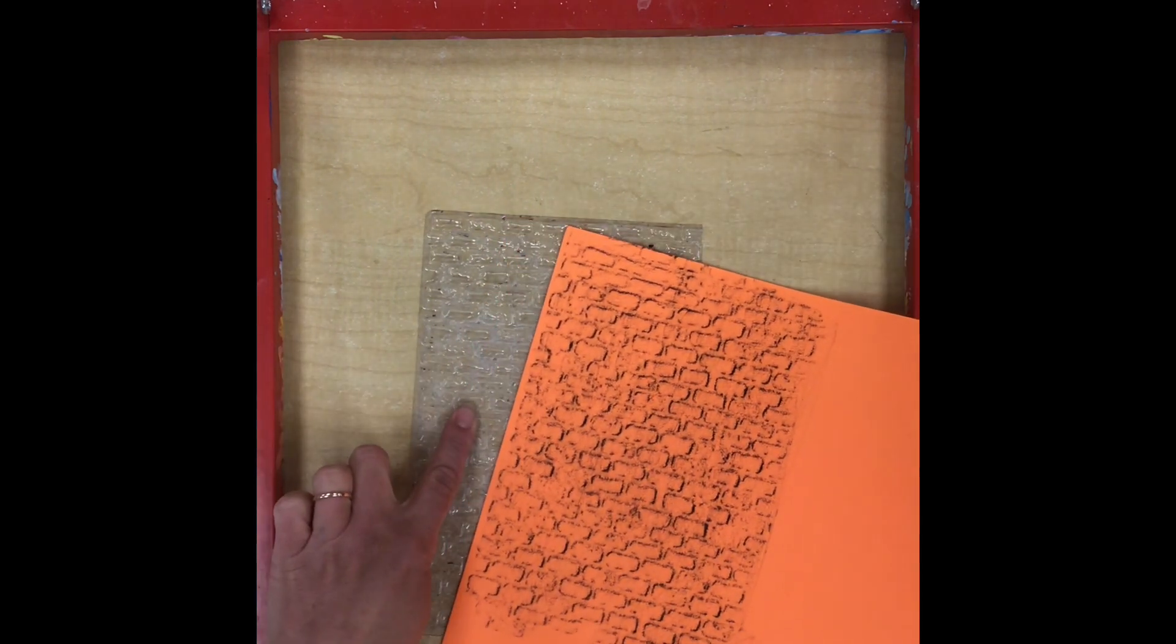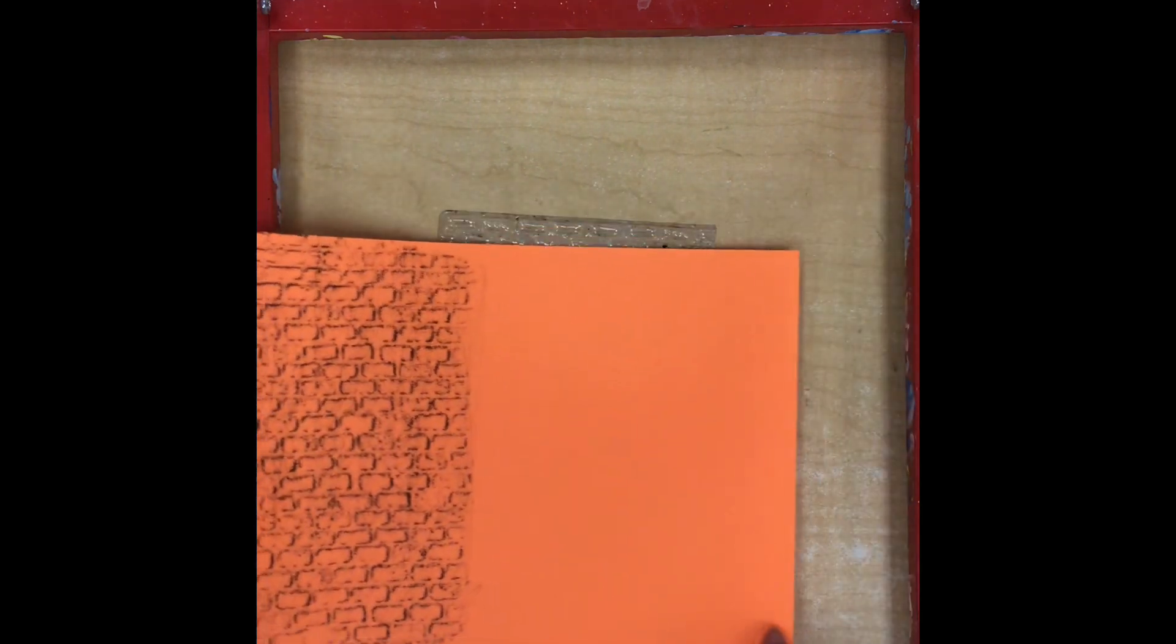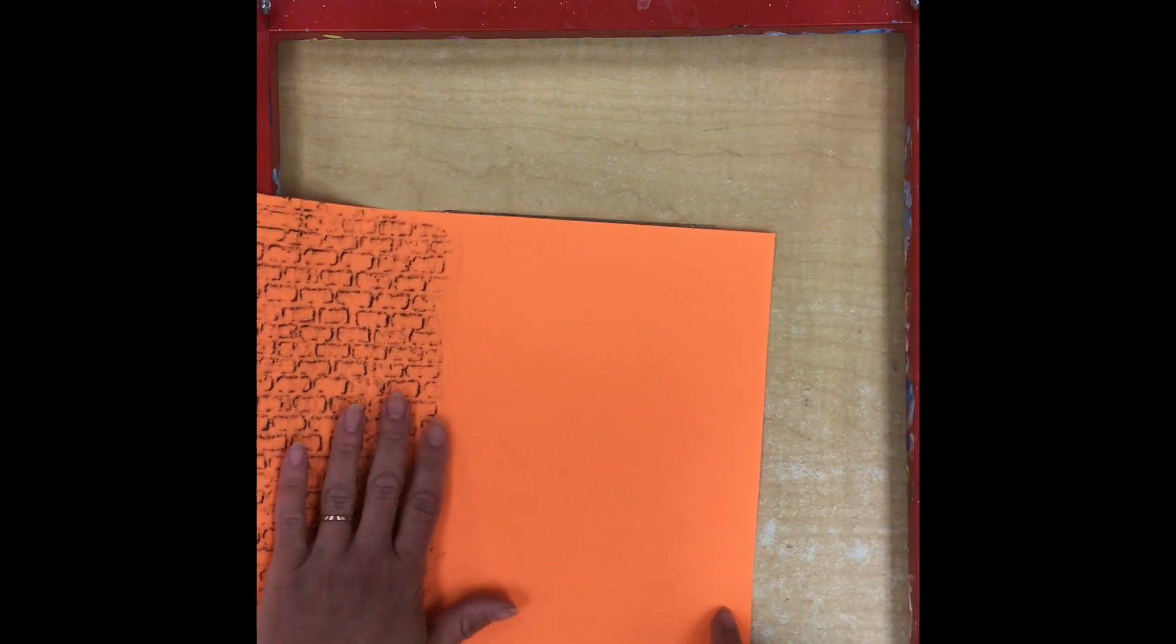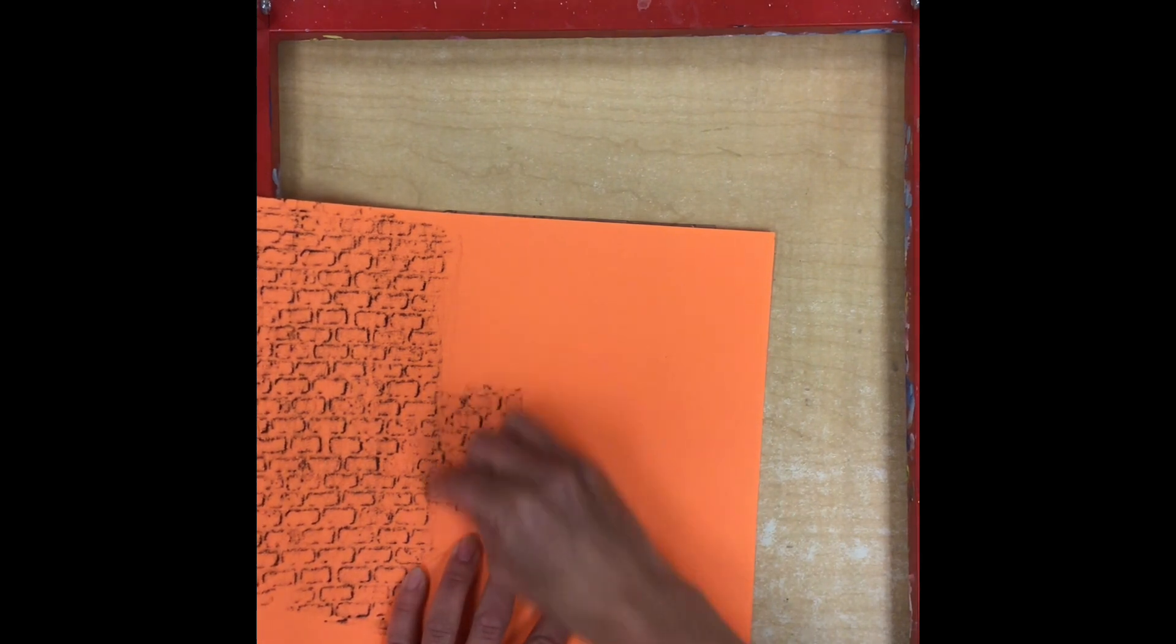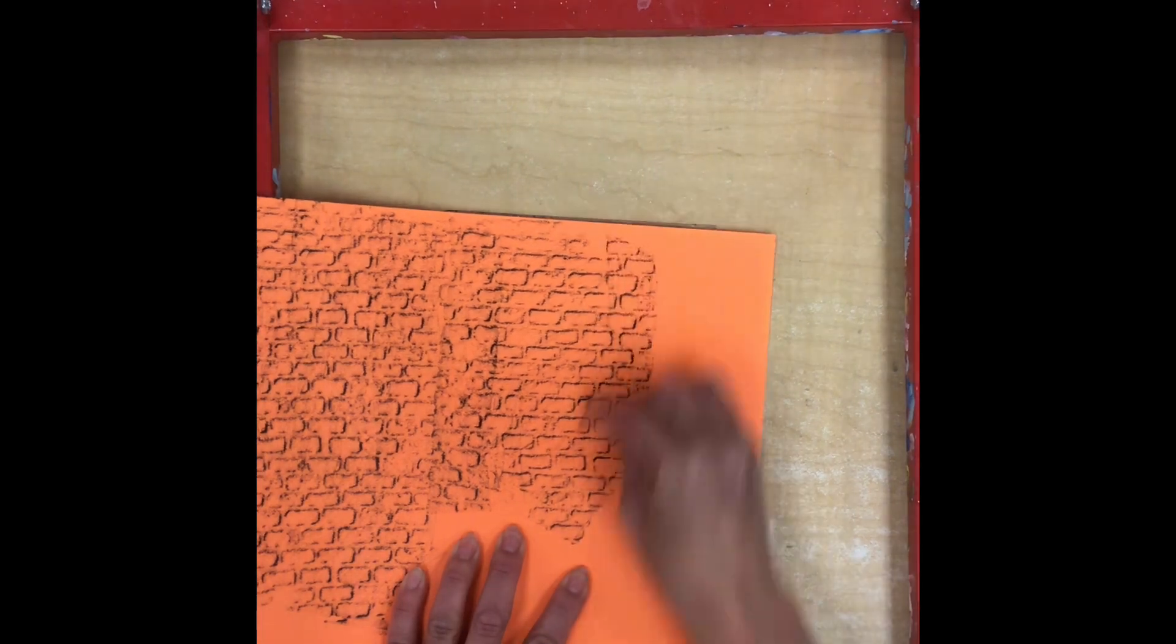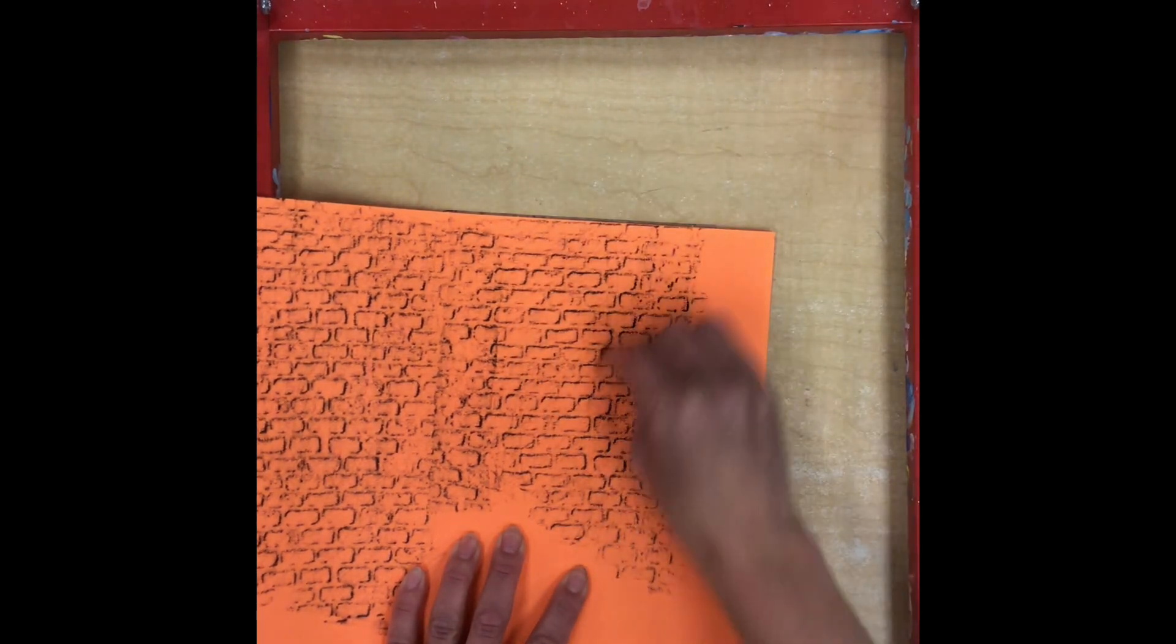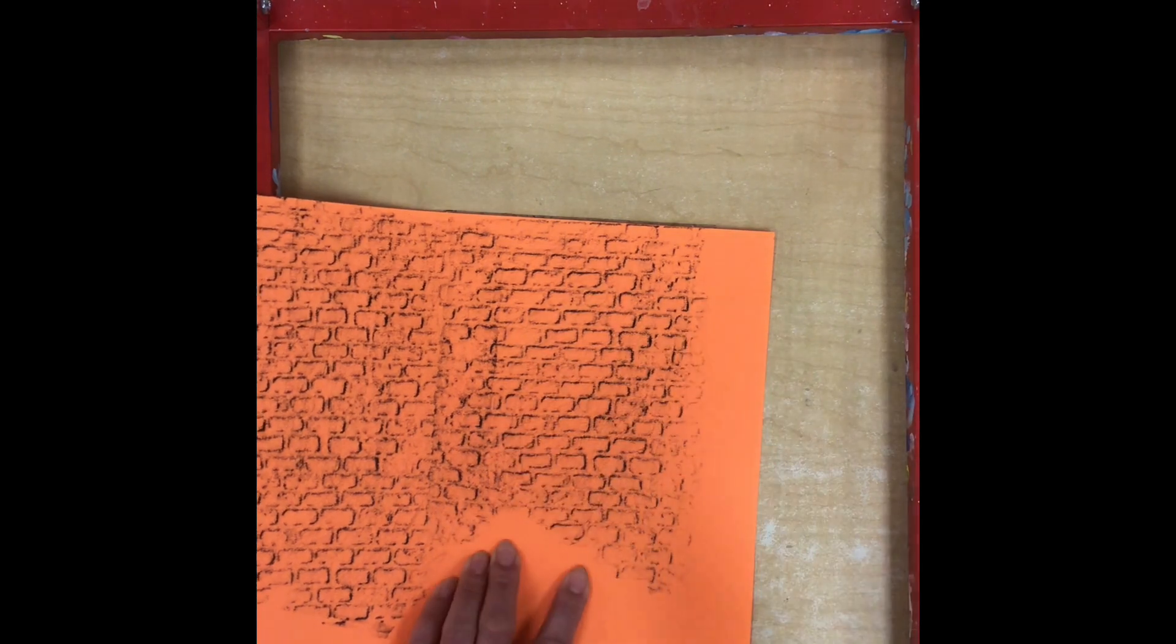Obviously the texture plate is smaller than the paper, so when I've got one area done I'm going to very carefully move it to the next area. I'm just going to keep rubbing over the texture plate until I've filled the whole paper.